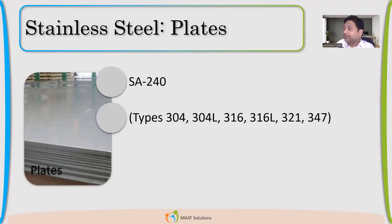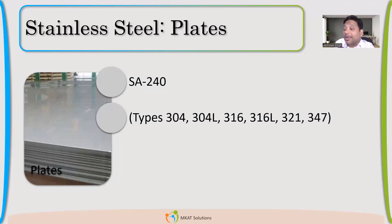There are several grades: 304, 304L, 316, 316L, 321, and 347, among others. The 'L' in 304L indicates low carbon. The carbon percentage in 304 is 0.08%, while in 304L it is 0.03% — that is the difference. Grades 321 and 347 are called stabilized stainless steel — stabilized grades. We'll discuss why those are required.